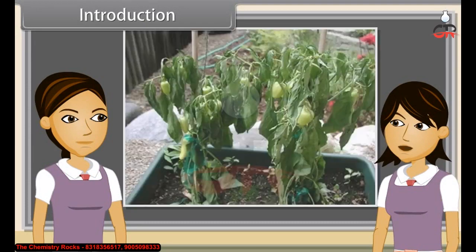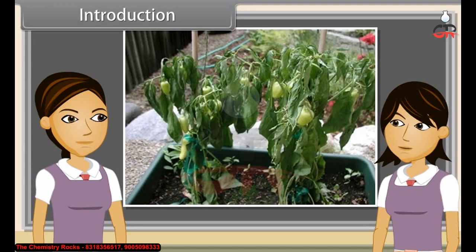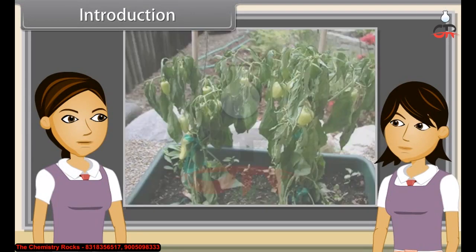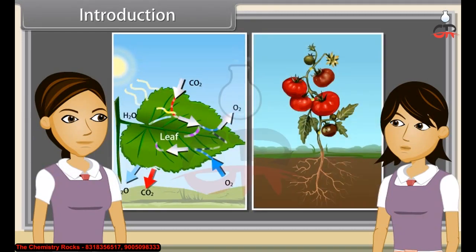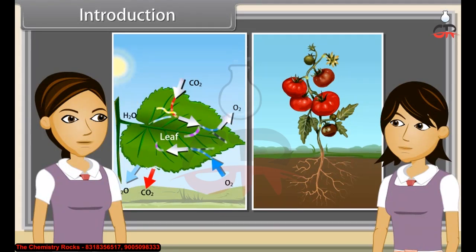We all know that all plants need water. The wilted leaves recover when a plant is watered, which means that water has been conducted upwards into the leaves. The leaves also need water for photosynthesis. The food produced in the leaves has to be transported to other parts of the plant, including the stem, the roots, flowers and fruits. All this transportation is the function of conducting tissues.